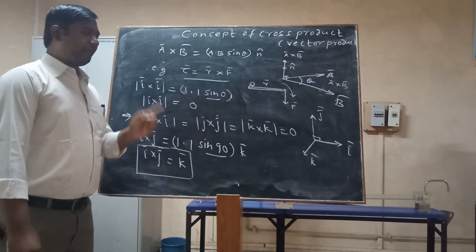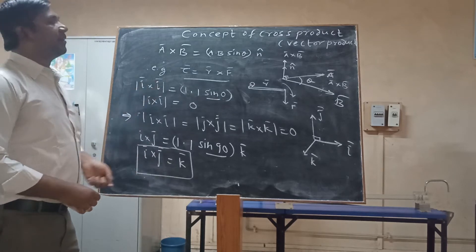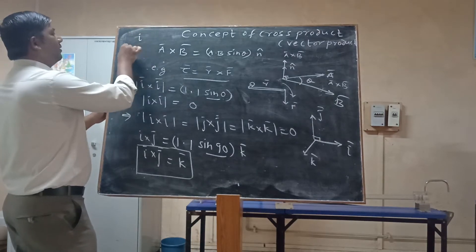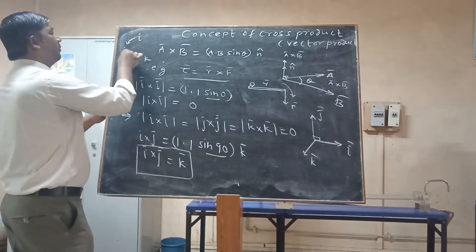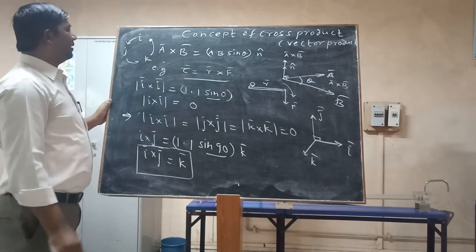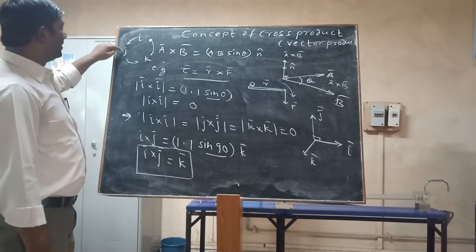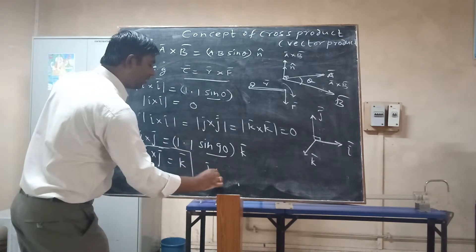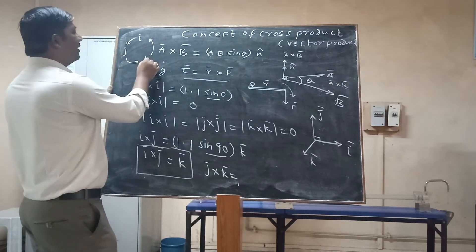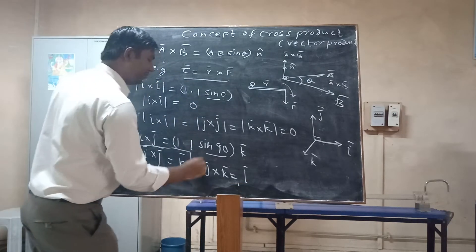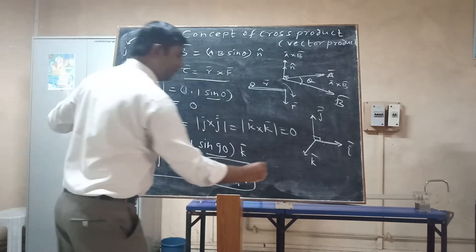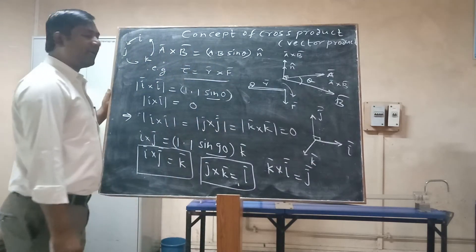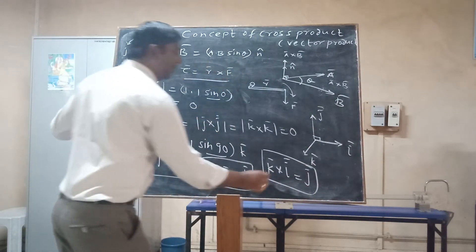If you draw a cyclic circle with î, ĵ, and k̂, it becomes easy to remember these results. Going in order: î × ĵ = k̂, ĵ × k̂ = î, and k̂ × î = ĵ. Maintain the sequence and these results follow naturally from the cyclic property of unit vectors.